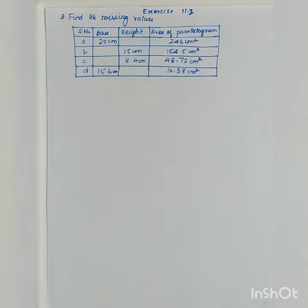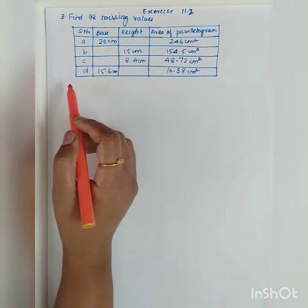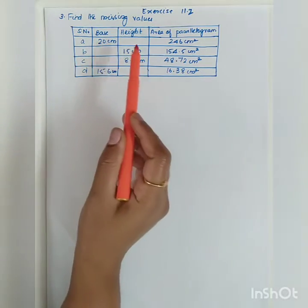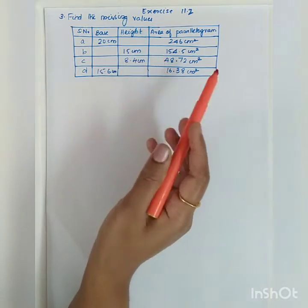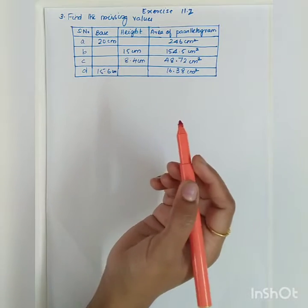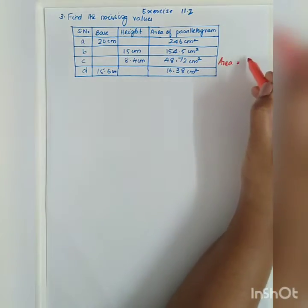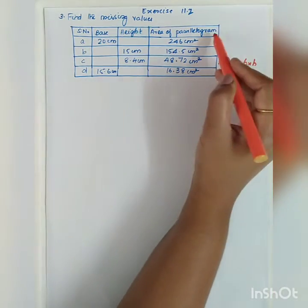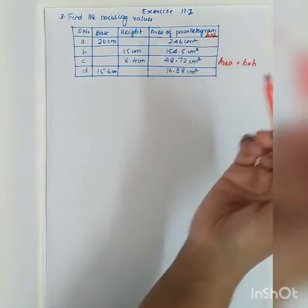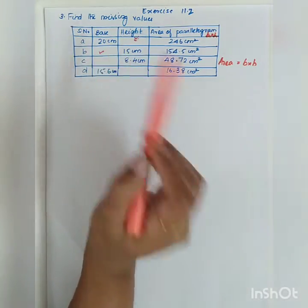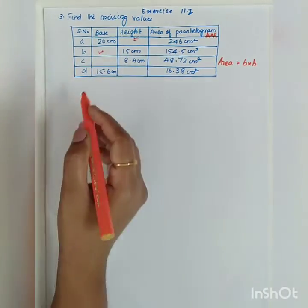The next question is exercise 11.2, third question — find the missing values. The data given includes base, height, and area of the parallelogram. We know that the area of a parallelogram is equal to base into height, so we have to find either the missing height or base.